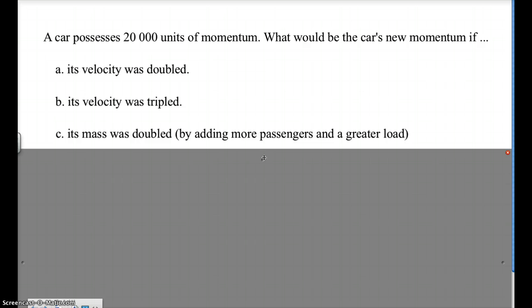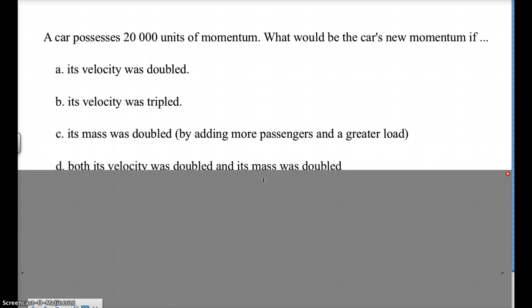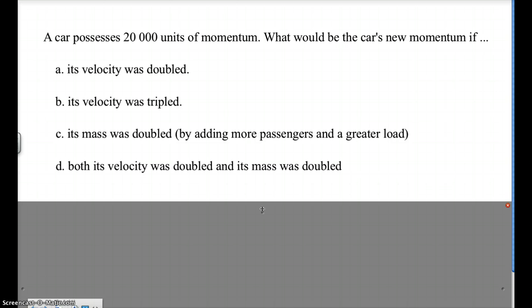If you doubled the mass, the momentum would be doubled. And if you doubled both of them, you'd end up with four times momentum, two times times two, so four times. It's really pretty easy in that sense. Double the velocity, double the momentum. Double the mass, double the momentum. They're directly proportional.